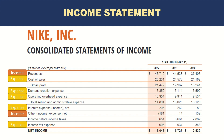We have now looked at all the elements of financial statements: assets, liabilities, and equity on the balance sheet, and income and expenses on the income statement. Next, we will look at accounting principles, and then jump back into the rules of debit and credit with some accounting entries for practice.